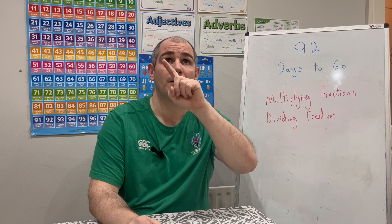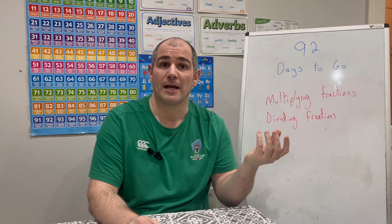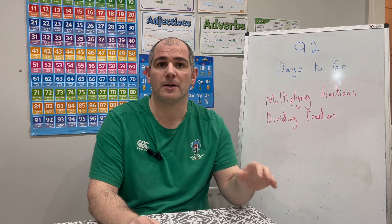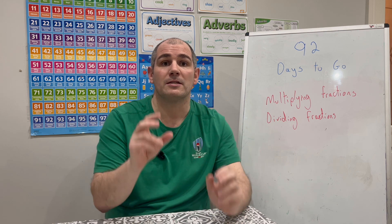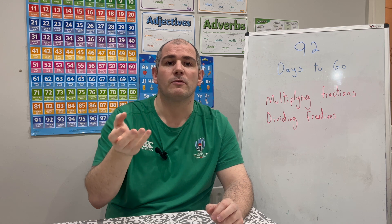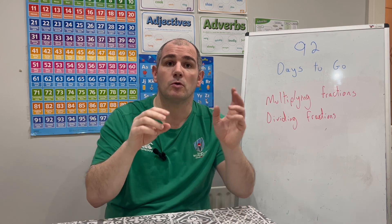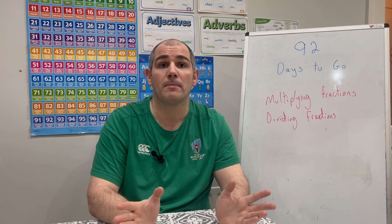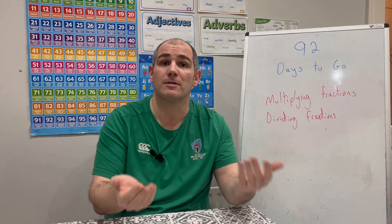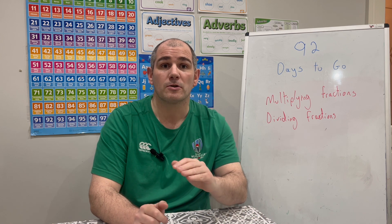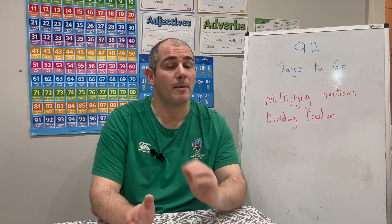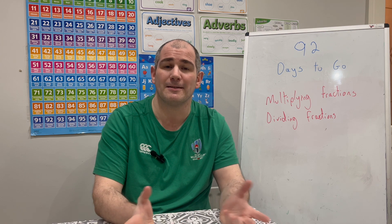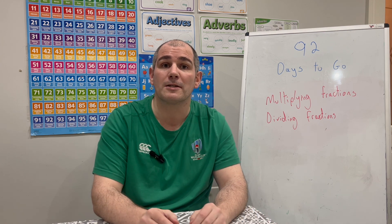So in this video we've looked at how to multiply fractions — multiply the numerators and denominators and cancel down if you can. Also how to multiply mixed numbers — make them top-heavy first, then multiply. We've looked at how to divide fractions by multiplying by the reciprocal, and how to divide mixed numbers by making them top-heavy then applying the same technique. The practice questions are in the description below — keep up the hard work, do your revision little and often, and I'll see you tomorrow at 3 o'clock. Cheers, bye!